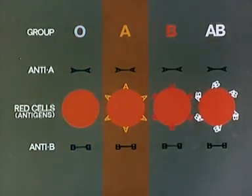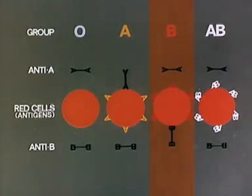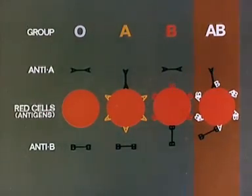Group A red cells are agglutinated by anti-A antibodies, group B by anti-B antibodies, and group AB are agglutinated by both anti-A and anti-B antibodies.